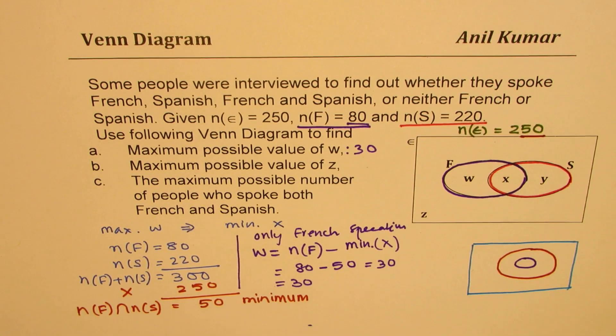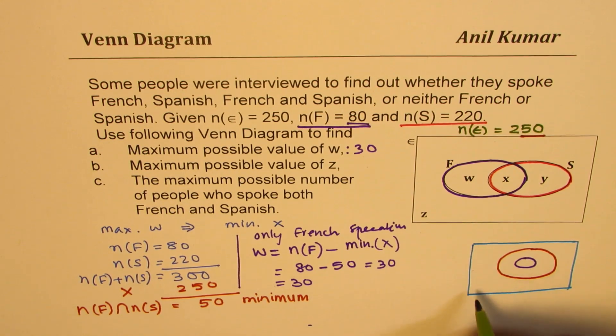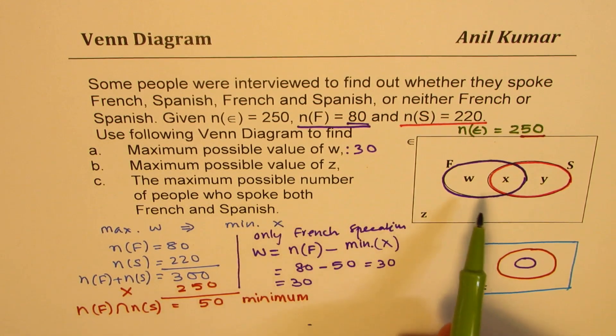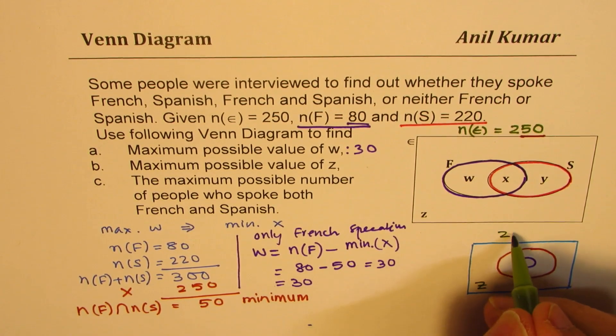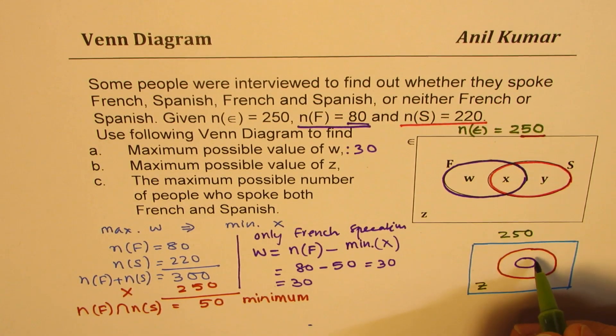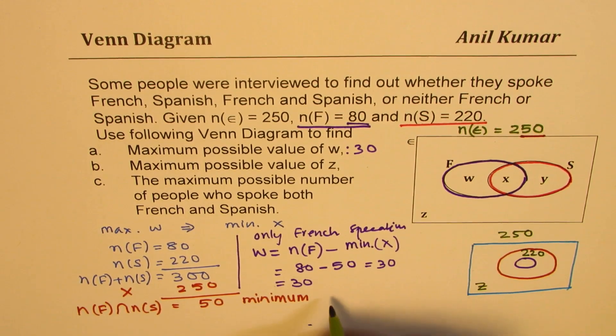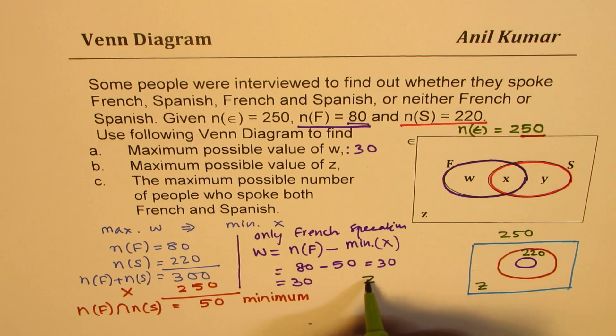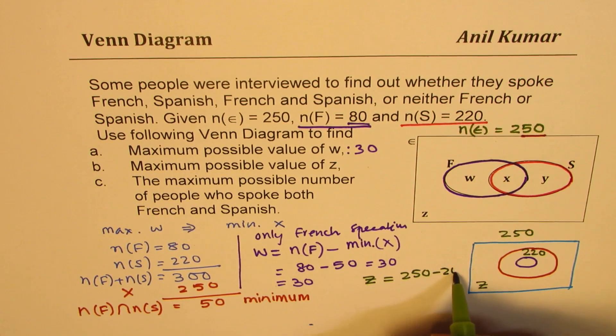In that case, we get maximum Z, you get the idea. So clearly, the maximum people who cannot speak both these languages will be in this scenario. Now we know total is 250 and Spanish speaking in the survey group is 220. So Z should be equal to 250 minus 220.